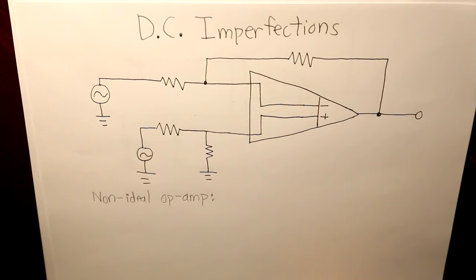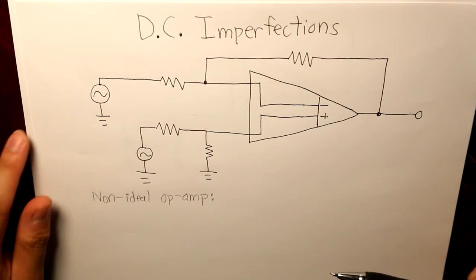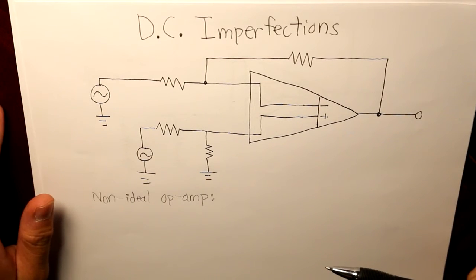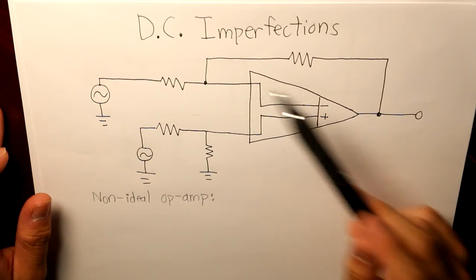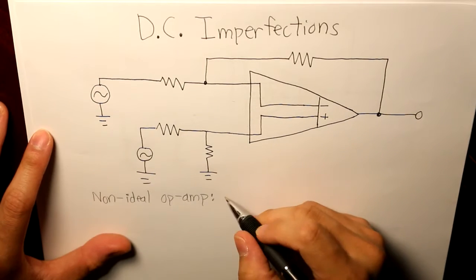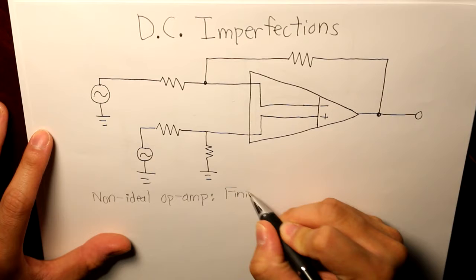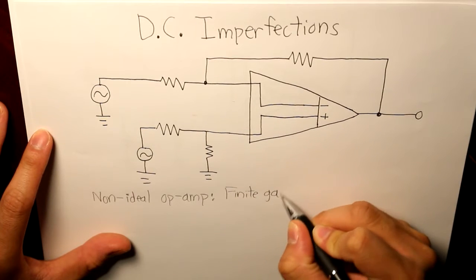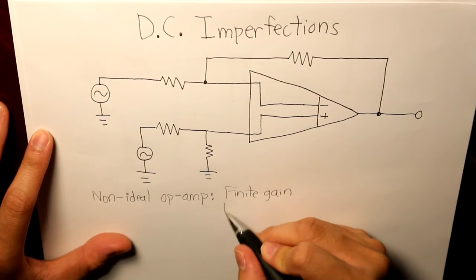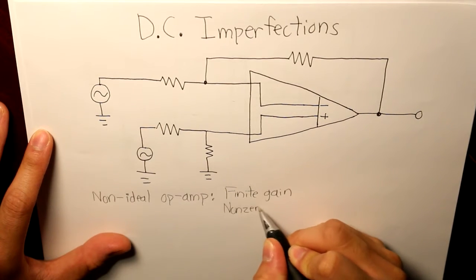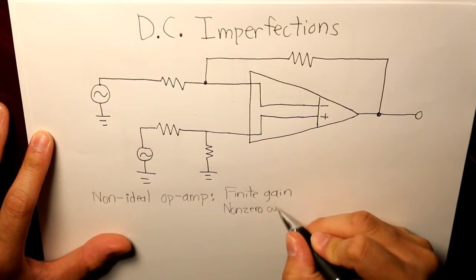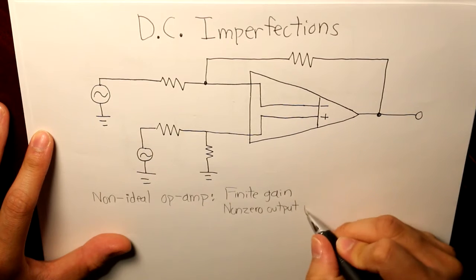So we have the non-ideal op amp, and there's a lot of characteristics. I'm going to highlight five main ones. One characteristic that would contribute to DC imperfection is finite gain. Number two, non-zero output impedance.